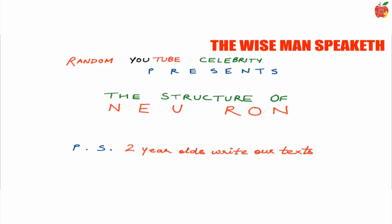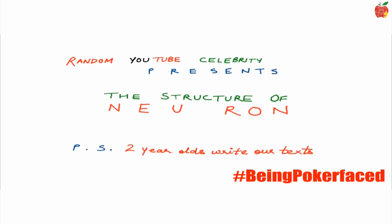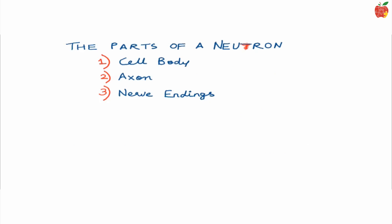You're just giving them more reasons to not watch this. Okay, so there are three parts in this diagram of a neuron, which are: one, the cell body, two, the axon, and three, the nerve ending. So let's get